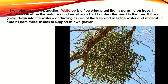Even plants can be parasites. Mistletoe is a flowering plant that is a parasite on trees. It establishes itself on the surface of a tree when a bird transfers the seed to the tree. It then grows down into the water-conducting tissues of the tree and uses the water and minerals obtained from these tissues to support its own growth.